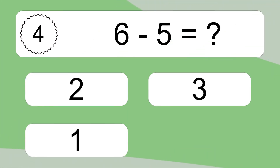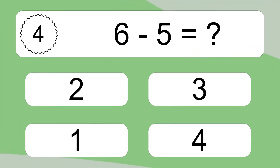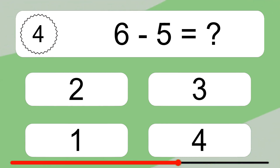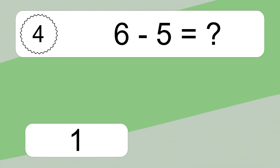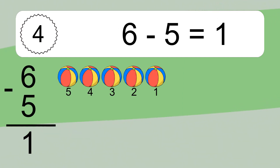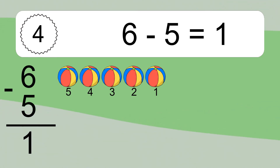6 minus 5 equals what? 6 minus 5 equals 1. Let's count it: 5, 4, 3, 2, 1.